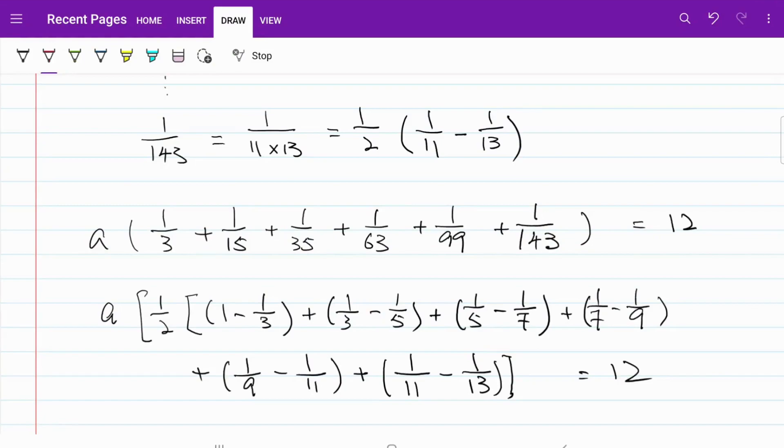If we look at what's within the bracket, we realize that the terms actually cancel each other. So I have negative 1 over 3 and positive 1 over 3 canceling each other. 1 over 5 and 1 over 5 canceling each other. 1 over 7, 1 over 9, negative 1 over 11 and positive 1 over 11 will cancel each other.